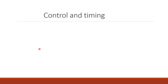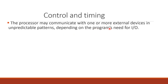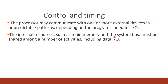There are peripheral devices connected to your computer, and we communicate with each device. If you want to use a keyboard, mouse, printer, or hard disk, the processor may communicate with one or more external devices in unpredictable patterns depending on the program's need for IO. Internal resources such as main memory and system bus must be shared among a number of activities including data input/output.